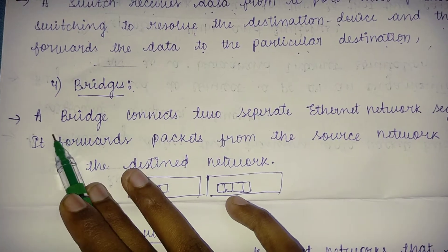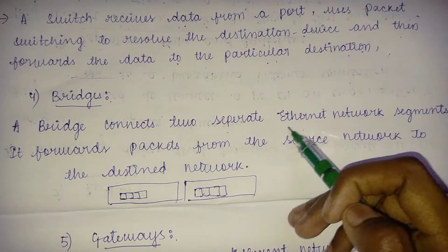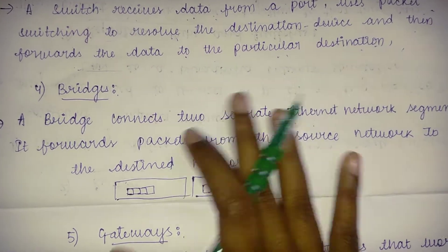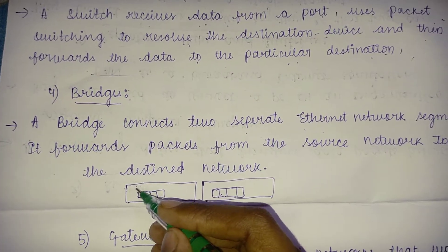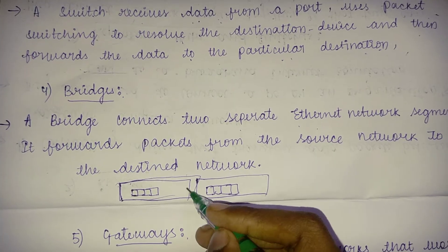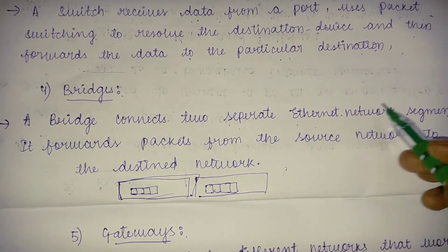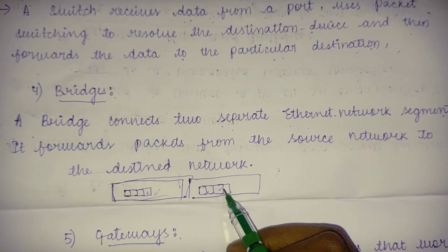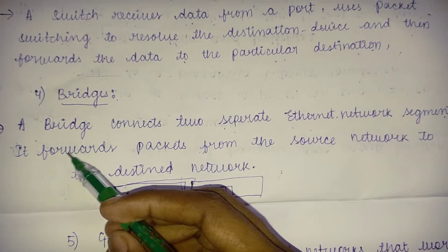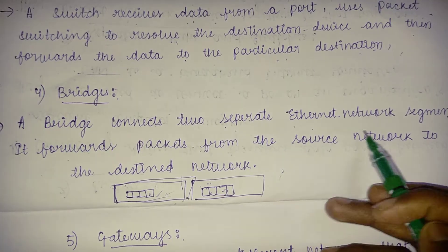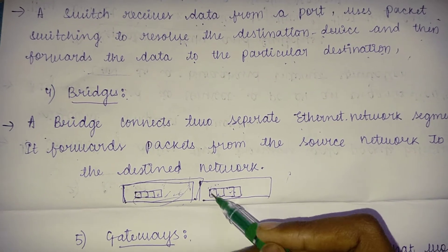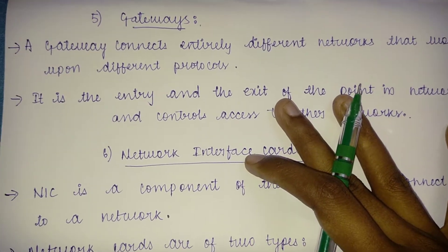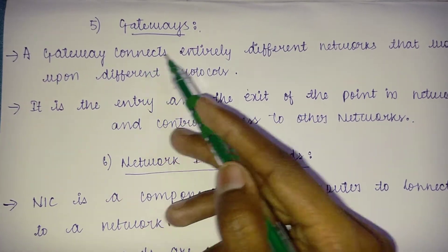The fourth component is a bridge. A bridge connects two separate Ethernet network segments and forwards packets from the source network to the destination network. Just like a road bridge connects two sides, a network bridge connects two Ethernet segments, forwarding packets from one to the other.